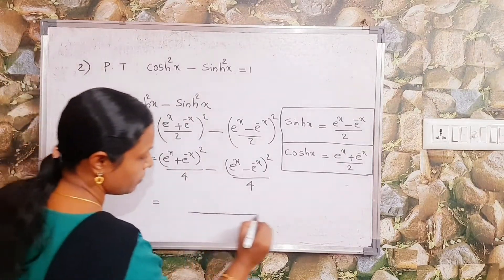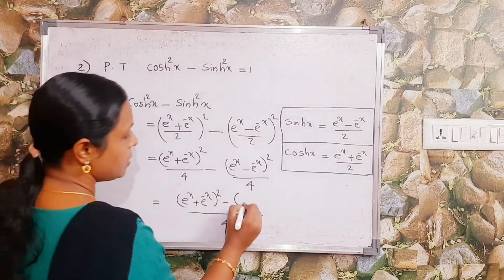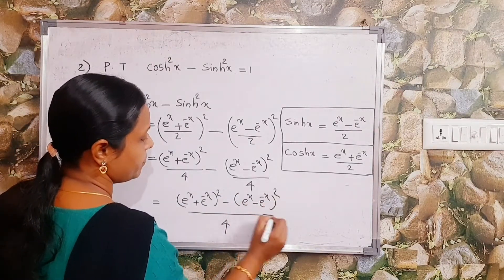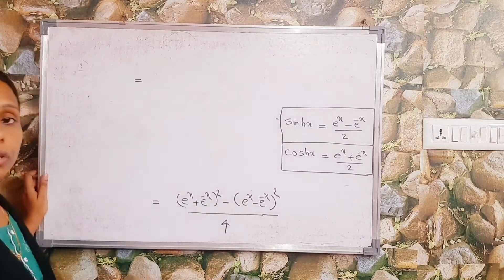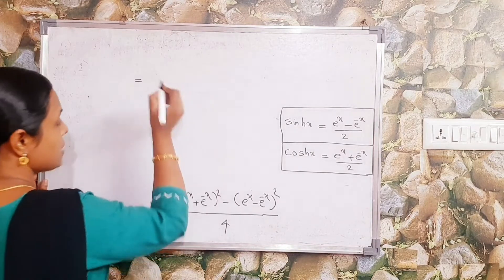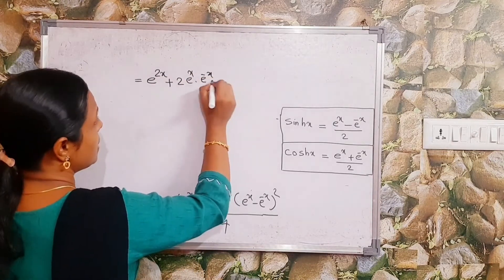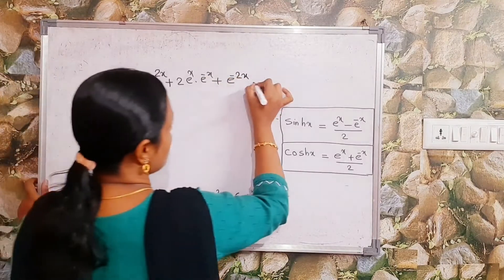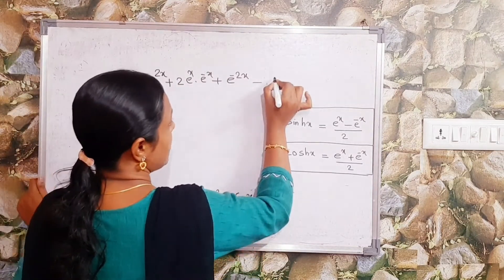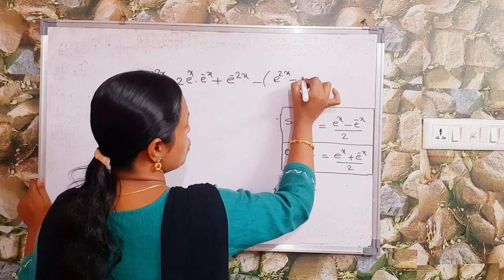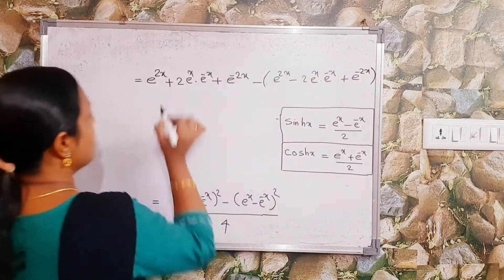The denominators are the same, so we take 4 in the denominator and write in the numerator: (e^x + e^(-x))² - (e^x - e^(-x))². Expanding (a + b)² gives a² + 2ab + b², so we get e^(2x) + 2·e^x·e^(-x) + e^(-2x). Then subtracting (a - b)² = a² - 2ab + b², we write minus (e^(2x) - 2·e^x·e^(-x) + e^(-2x)), all divided by 4.